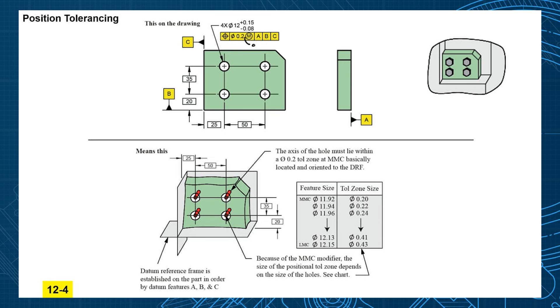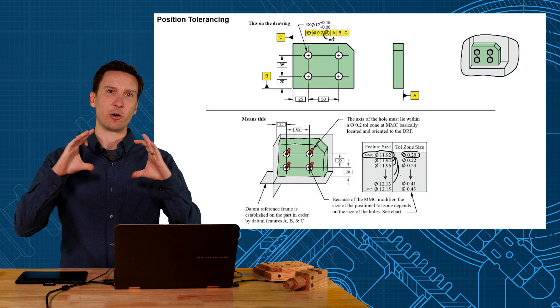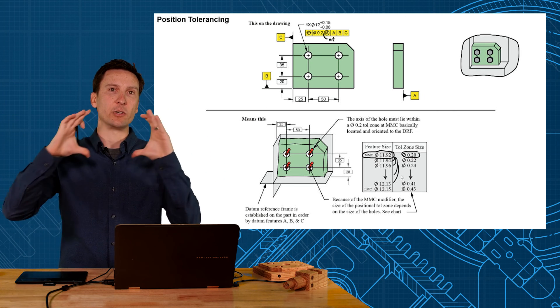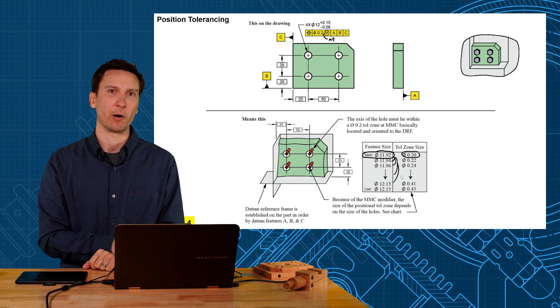Remember the MMC says you get a 0.2 position tolerance at the maximum material condition. So 11.92 is our maximum material condition. That's where you get the 0.2 size. And then what happens when you make the hole bigger? Bonus tolerance. So as the hole gets larger in size then it gets an increase in position tolerance but still clears that same virtual condition boundary for our mating part.